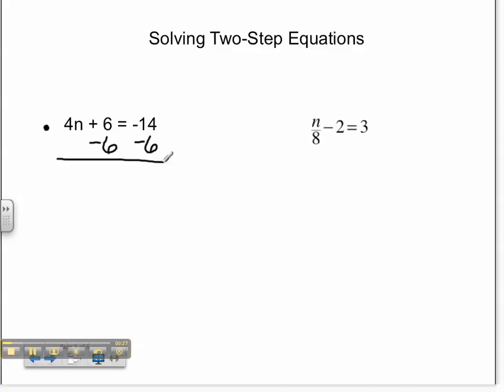6 minus 6 is 0. We are left with 4n on that side. Negative 14 minus 6 is negative 20.